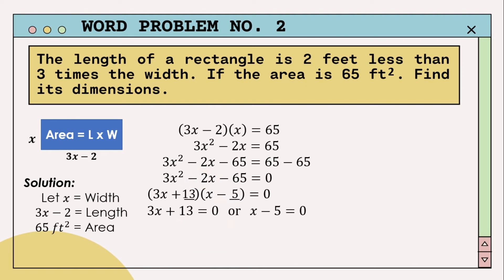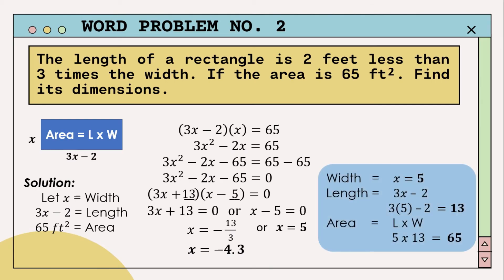We can now solve the equation. This means 3x plus 13 equals zero, or x minus 5 equals zero. The first value gives x equals negative 13 over 3, which we reject since a dimension cannot be negative. The second value gives x equals 5. So the width is 5 feet. The length is 3x minus 2, substituting x equals 5: 3 times 5 minus 2 equals 13 feet. Therefore, the dimensions are width equals 5 feet, length equals 13 feet, and area equals 65 feet squared.